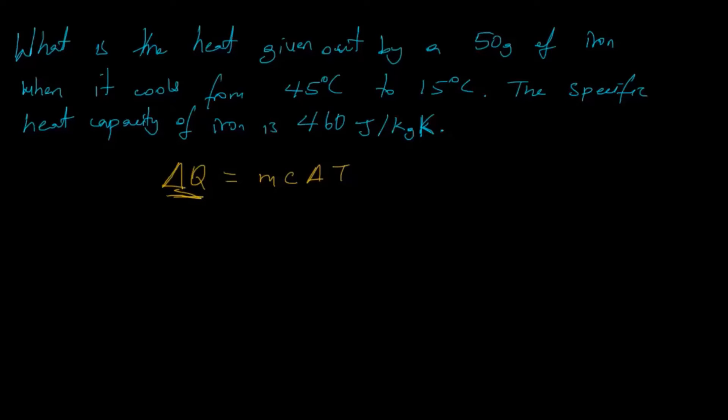So I want to find Delta Q, which is the heat given out by the iron. Now we're told that the mass of the iron is 50 grams, which is simply 0.05 kilograms. Our specific heat capacity is 460 joules per kilogram Kelvin.